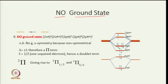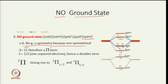For the NO molecule, the configuration has 2 electrons in each of 2s sigma levels, 4 electrons in 2p pi, and 1 electron in 2p pi*. Since NO is non-symmetric, there is no G/U symmetry. The 1 electron in 2p pi* gives lambda=±1 (pi term), S=1/2, multiplicity = 2(1/2)+1 = 2, giving a 2Π ground state.